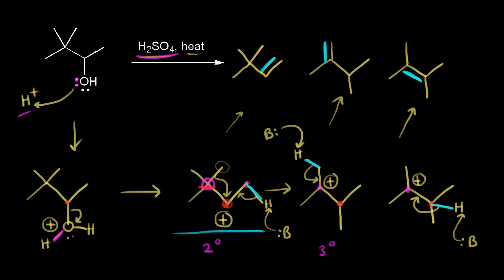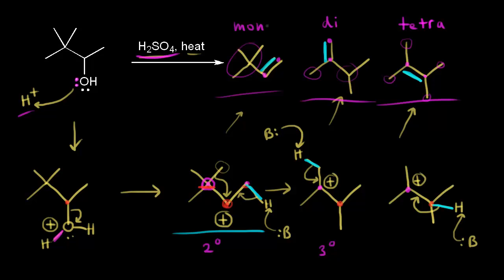So we get three products from this E1 reaction. Thinking about which is the major product by degree of substitution: the first alkene has four alkyl groups across the double bond — a tetrasubstituted alkene — making it the most stable and the major product. The second is a disubstituted alkene with two alkyl groups, and the third from the secondary carbocation without rearrangement is a monosubstituted alkene. Only a very small percentage of product will be the monosubstituted alkene; most will be the di- and tetrasubstituted alkenes, with the tetrasubstituted alkene as the major product.